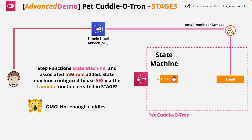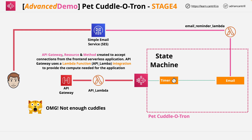Welcome back to part four of this demo series. In this video, you're going to create the Lambda function that supports the API Gateway, and the API Gateway itself, which will function as the entry point to our application. By creating the API Gateway, you'll have an endpoint that your client application can use to talk to our application.